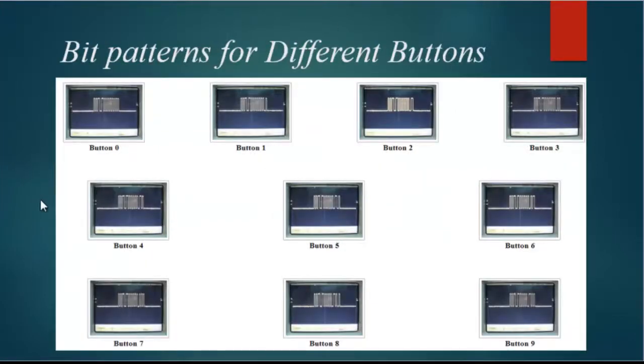As I mentioned previously, the last six command bits are different for each button of the TV remote. If we press each button from button 0 to button 9 and observe the output from the TSOP receiver in an oscilloscope, we will observe this sort of waveforms. The last six command bits actually represent the binary value for each button.